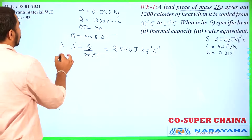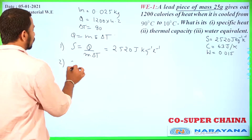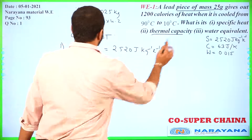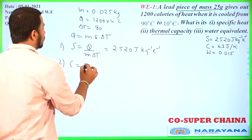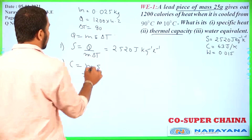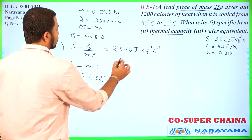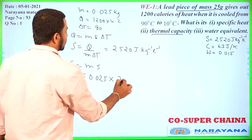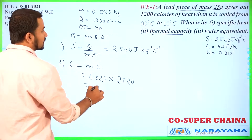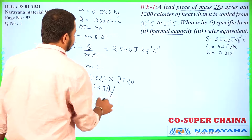Now we need to find the thermal capacity C. Thermal capacity C equals ms. Substitute the value of m and s. We will get the answer as 63 joule per kelvin. That will be the answer for this part.